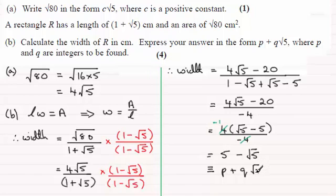And you can see that this is in the form that we're asked for, P plus Q root 5. And we've got to state what values of P and Q are, and they are integers to be found. So we could say that P is equal to 5 and Q is equal to minus 1.